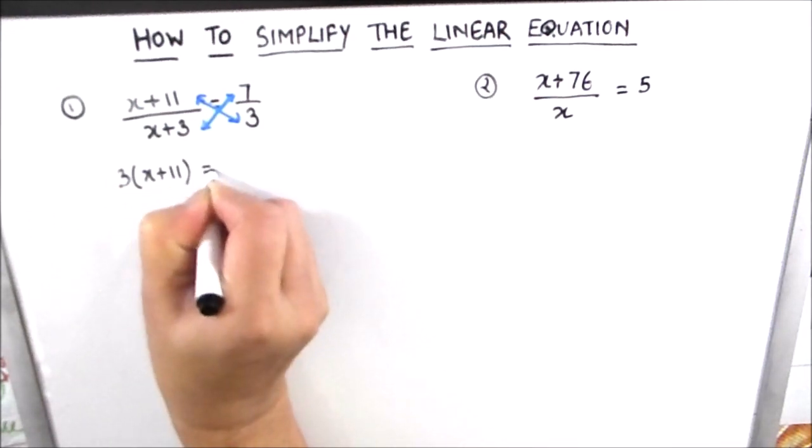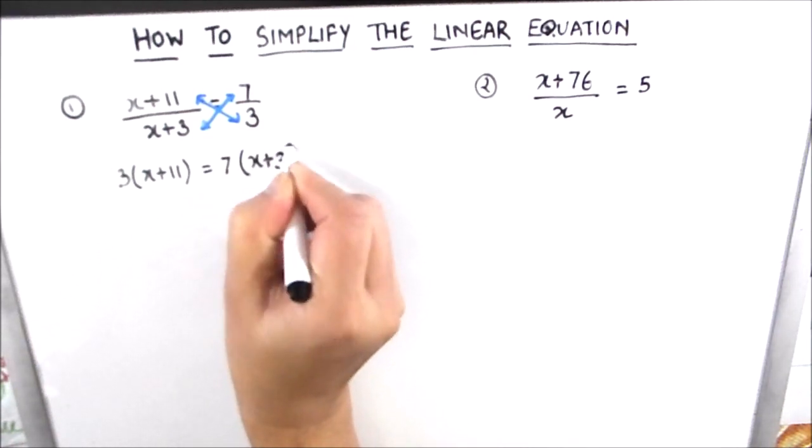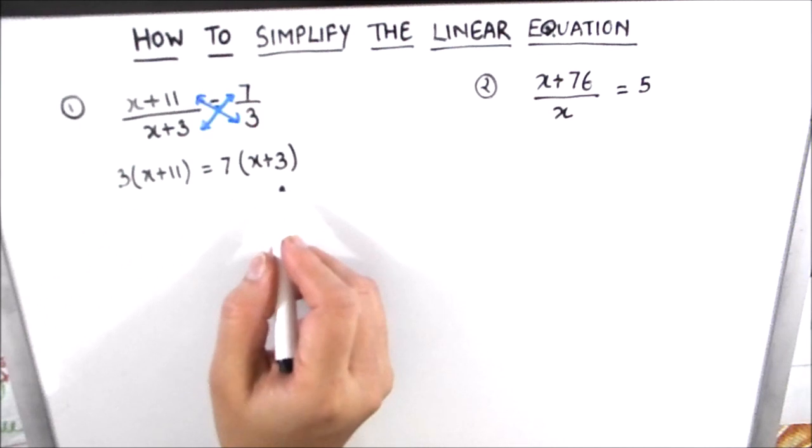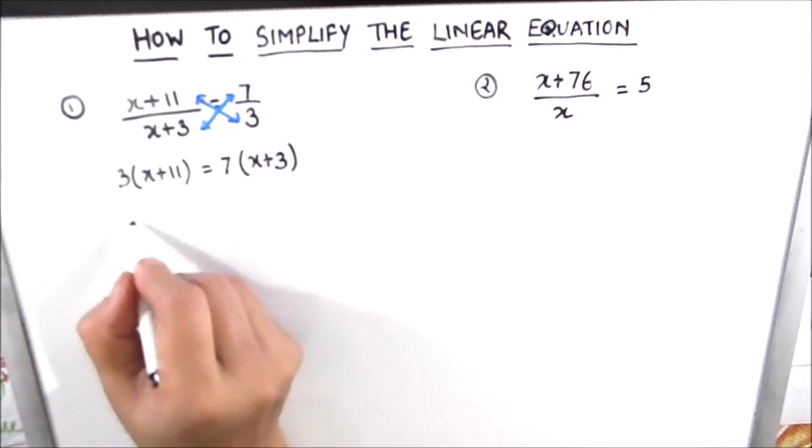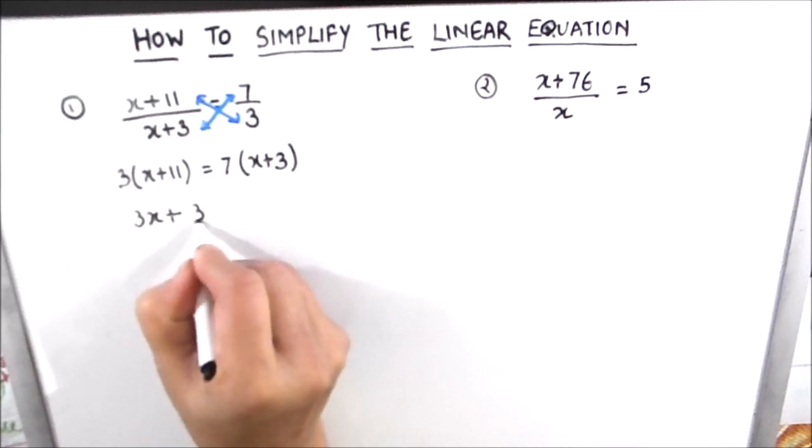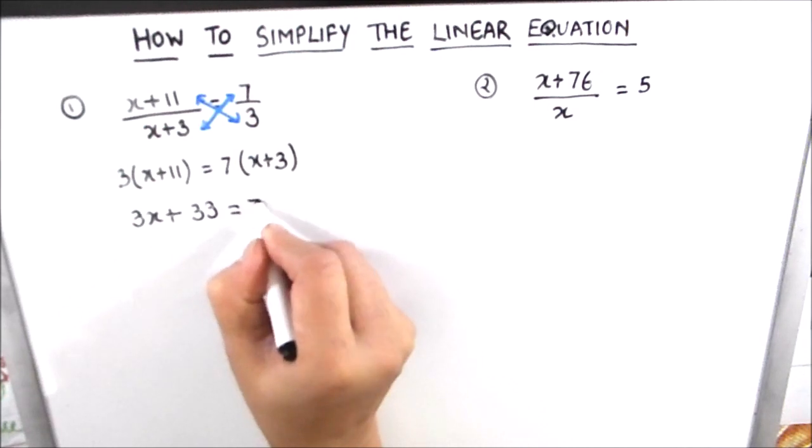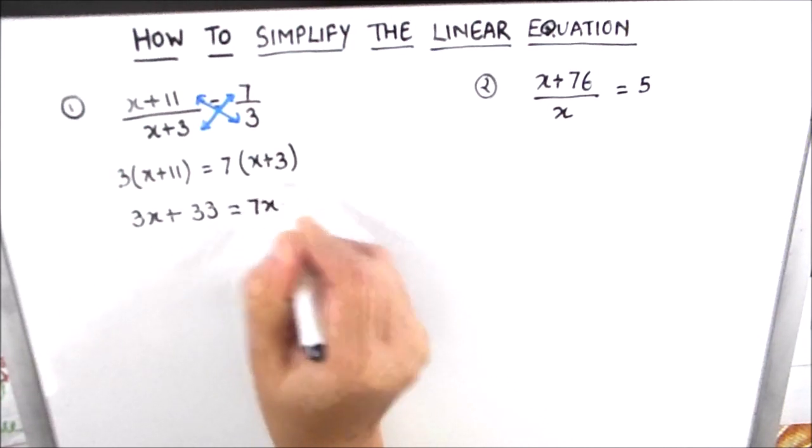Now we can distribute and solve this. So 3 times x is 3x plus 3 times 11 is 33, is equal to 7 times x is 7x plus 7 times 3 is 21.